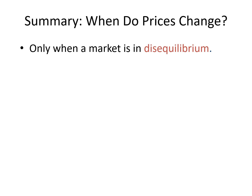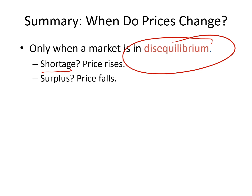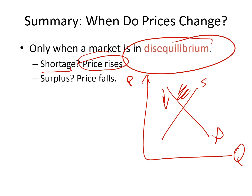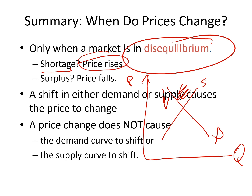As a final summary: prices change only when a market is in disequilibrium. If there is a shortage, prices need to rise; if there is a surplus, prices should fall. A shift in either demand or supply causes the price to change, but a price change does not cause the demand or supply curve to shift — because a price change only creates a movement along the curve, not a shift. This is the key distinction between a change in quantity supplied and a change in supply.